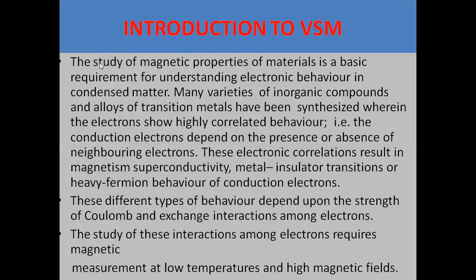We know that to study the magnetic properties of materials, our basic requirement is understanding electronic behavior. We study the electronic behavior to easily understand magnetic properties. There are many compounds such as inorganic compounds, alloys, and transition metals. These all have different electrons that show correlated behavior, like the conduction electrons that depend on the presence or absence of neighboring electrons.